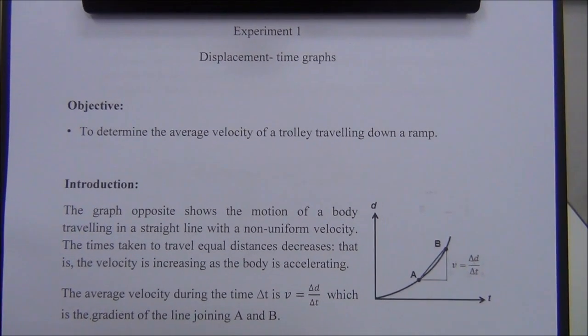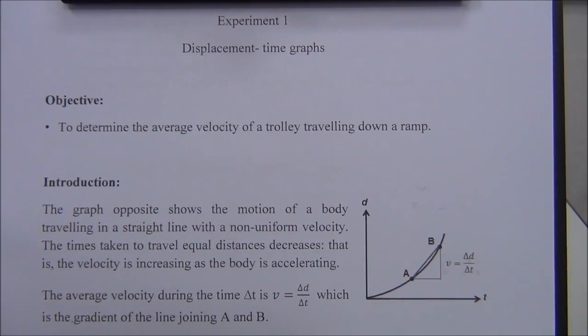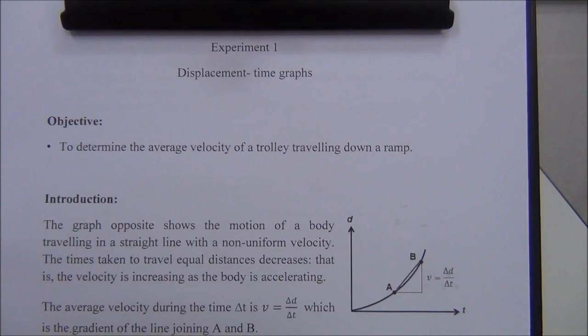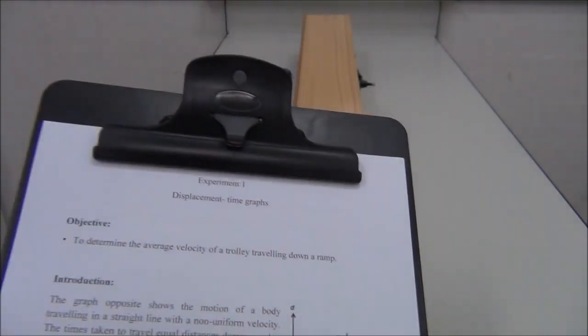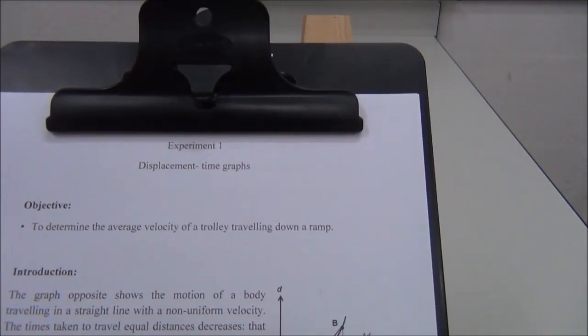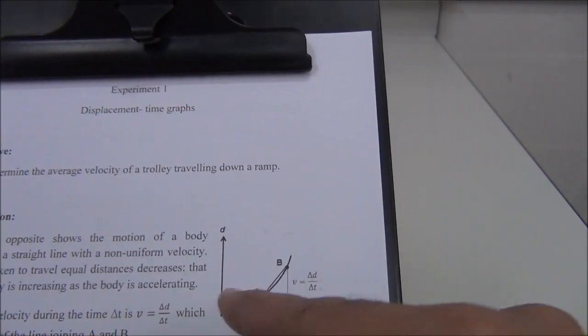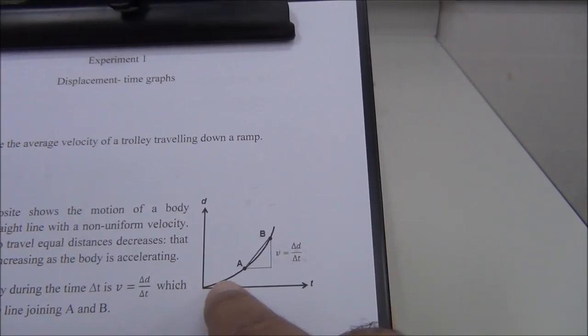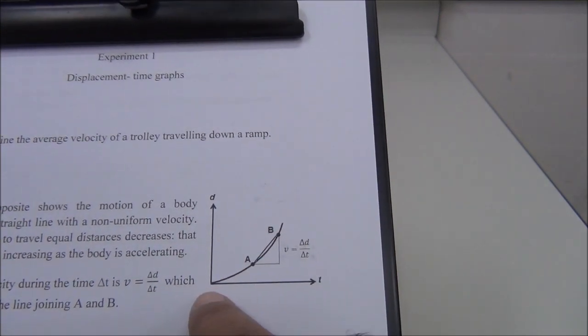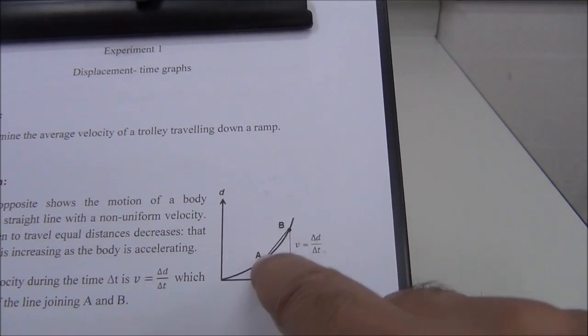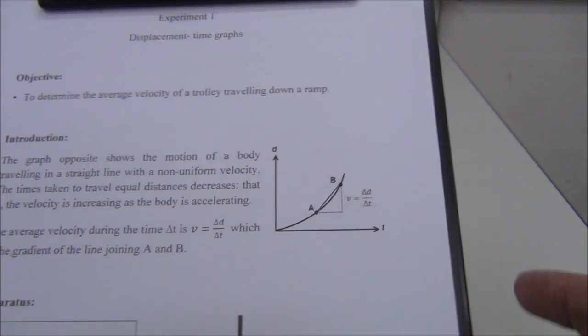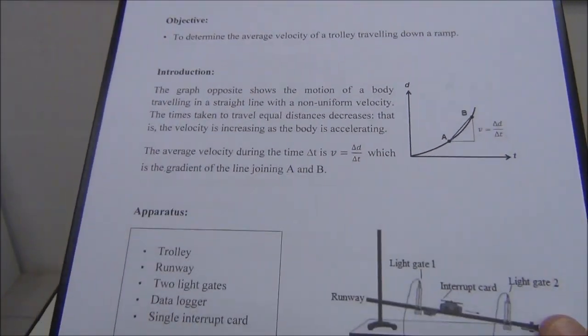Hello everyone, in this experiment I'm going to determine the average velocity of a trolley traveling down a ramp. Let's see the introduction. We draw a graph of distance versus time, plot the points, connect those points, and take any two points on the graph to find the slope.